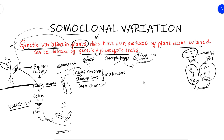Morphological traits we can talk about include leaf shape, leaf color, fruit taste, color, growth rate, and habit. Habitat refers to the nature of the plant's environment. We can also discuss fertility. We can talk about growth rate, habit, and fertility in relation to genes and morphological expression — this is the phenotypic expression.